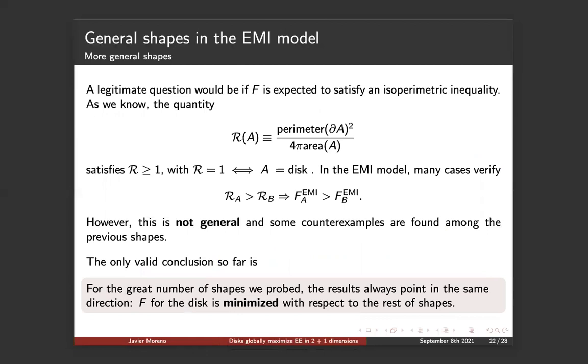So after all this discussion of the non-perturbative shapes, a legitimate question would be if F is expected to satisfy an isoperimetric inequality. As we know, the quantity R, which is the perimeter of the surface squared over four pi area, is always greater or equal than one, and it's one for the disk. In the EMI model, we check that many cases verify that if R of A is greater than R of B, then F of A is going to be greater than F of B. However, this is not general, and some counterexamples are found among the previous shapes. So the only valid conclusion so far is that for the great number of shapes we probed, the results always point in the same direction, that F for the disk is minimized for the rest of the shapes.